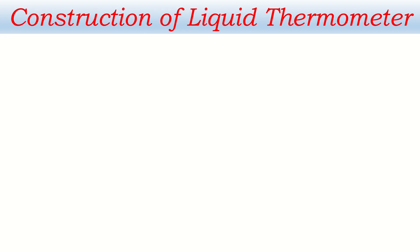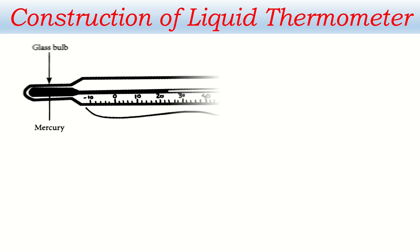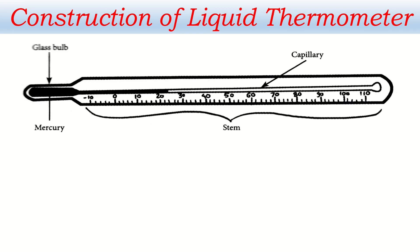Now, construction — how a liquid thermometer is constructed can be understood with the help of a diagram. This diagram represents the basic construction of a liquid thermometer. It has two parts: one is called the glass bulb, and a long stem is connected to it. The glass bulb is filled with mercury. A thin capillary tube starts from the glass bulb and goes up to the other end of the thermometer, and this capillary is surrounded by a thick glass wall.